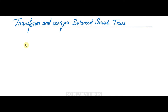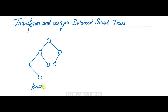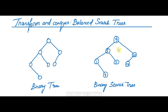Under the transform and conquer method, let's understand balanced search trees. A binary tree is an ordered tree in which every vertex has no more than two children; each child is designated as a left child or a right child. In a binary search tree, the number assigned to each parent node is greater than all numbers in its left subtree and smaller than numbers in its right subtree. For example, with root node 9, all elements to its left are lesser than 9 and all to the right are greater.